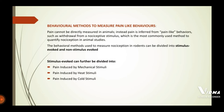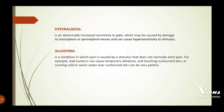Before discussing mechanical stimuli, two important terms are allodynia and hyperalgesia. Allodynia is a condition in which pain is caused by a stimulus that does not normally elicit pain. For example, a bad sunburn can cause temporary allodynia — touching the sunburned skin or running cold or warm water over it can be very painful. Hyperalgesia is an abnormally increased sensitivity to pain, which may be caused by damage to nociceptors or peripheral nerves.